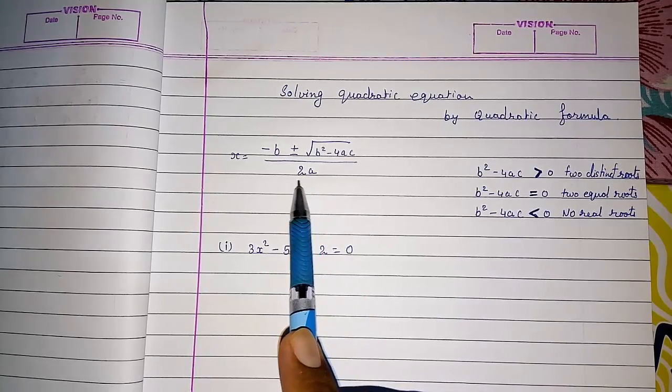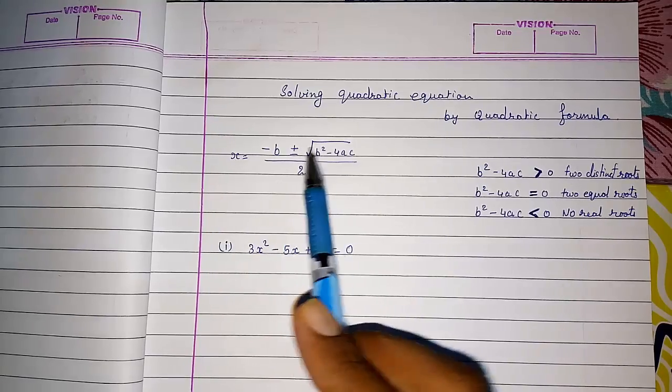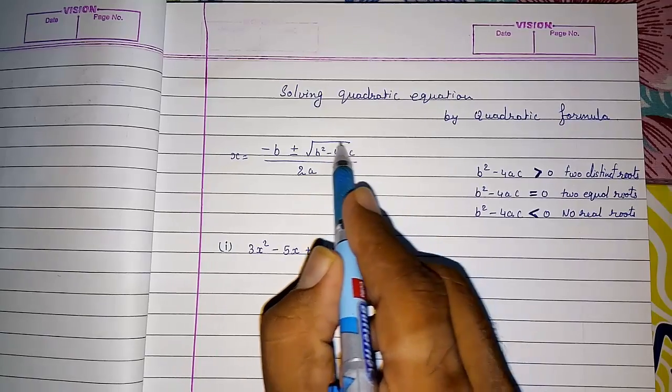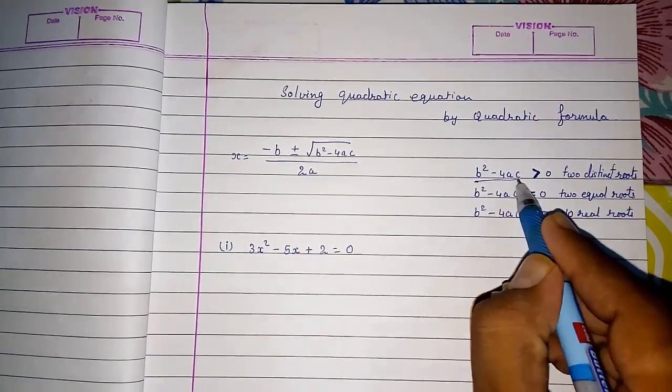In this formula we don't have to directly put the numbers and start solving it. First we have to find out only this b square minus 4ac. Look here I had done.